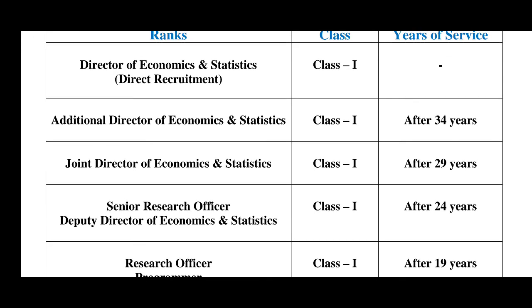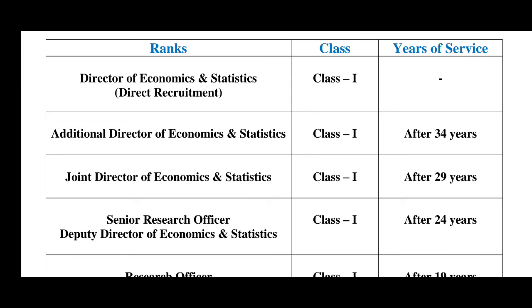After 34 years of service, you become eligible for Additional Director of Economics and Statistics. Whether you get the promotion depends on service performance, departmental exams, vacancies, and departmental recommendations. There are many factors involved. The highest rank is Director of Economics and Statistics.